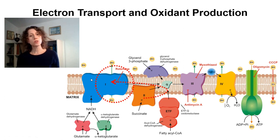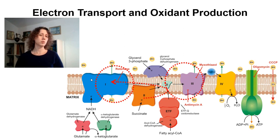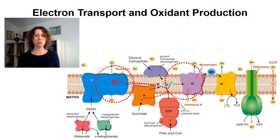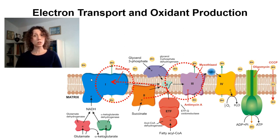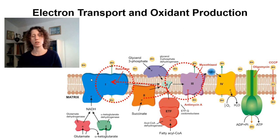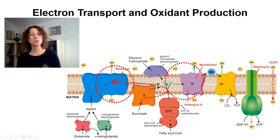In addition to reverse electron transfer and complex 1, complex 3 is known to be an important site of superoxide radical production, mainly because of the Q cycle within complex 3. The Q cycle involves the formation of the semiquinone radical, and this semiquinone radical can donate an electron to oxygen, generating superoxide radicals. Inhibiting complex 3 with myxothiazol, which prevents the formation of semiquinones, is going to inhibit this production of superoxide radicals.